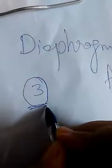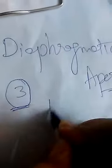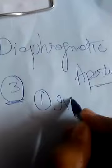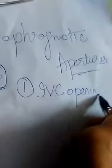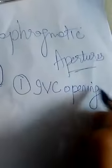We are going to discuss the diaphragmatic apertures or diaphragmatic openings. There are three major hiatuses in the diaphragm: first is the IVC opening, that is the inferior opening for the inferior vena cava.